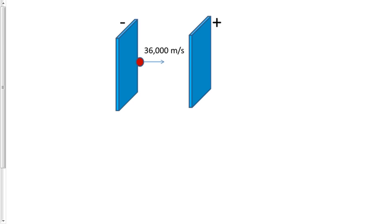There are two parallel metal plates here attached to an outside voltage source. We have a negative charge on the left plate and a positive charge on the right plate. And there's a proton that's been released at 36,000 meters per second going against the electric field.